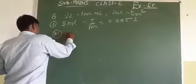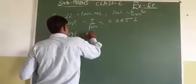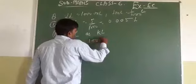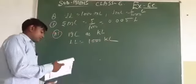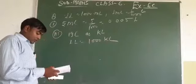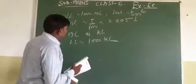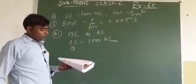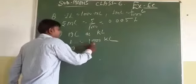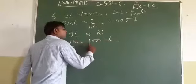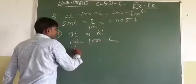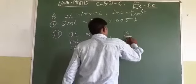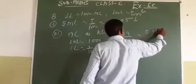Now the third part: 19 litre expressed as kilolitre. 1 kilolitre equal to 1000 litre, so 1 litre equal to 1 upon 1000 kilolitre. So 19 upon 1000 equal to 0.019 kilolitre.